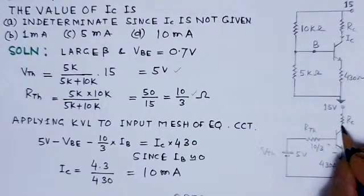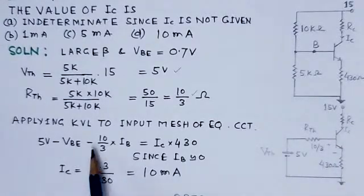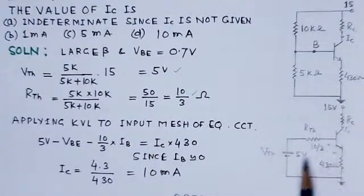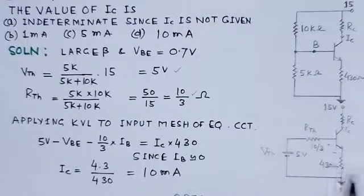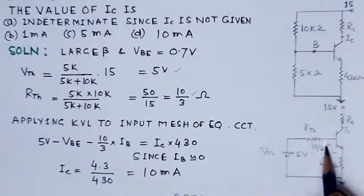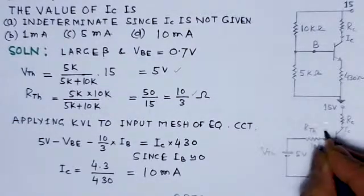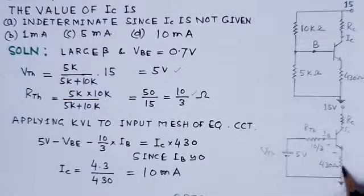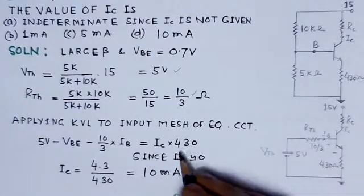Now we can find the value of IC, the collector current. We apply KVL to the input mesh: 5 volts minus VBE minus (10/3)·IB equals IC into 430 ohms. Here, (10/3)·IB represents the current flowing in the base branch, and this must equal IC times 430 ohms on the emitter side.